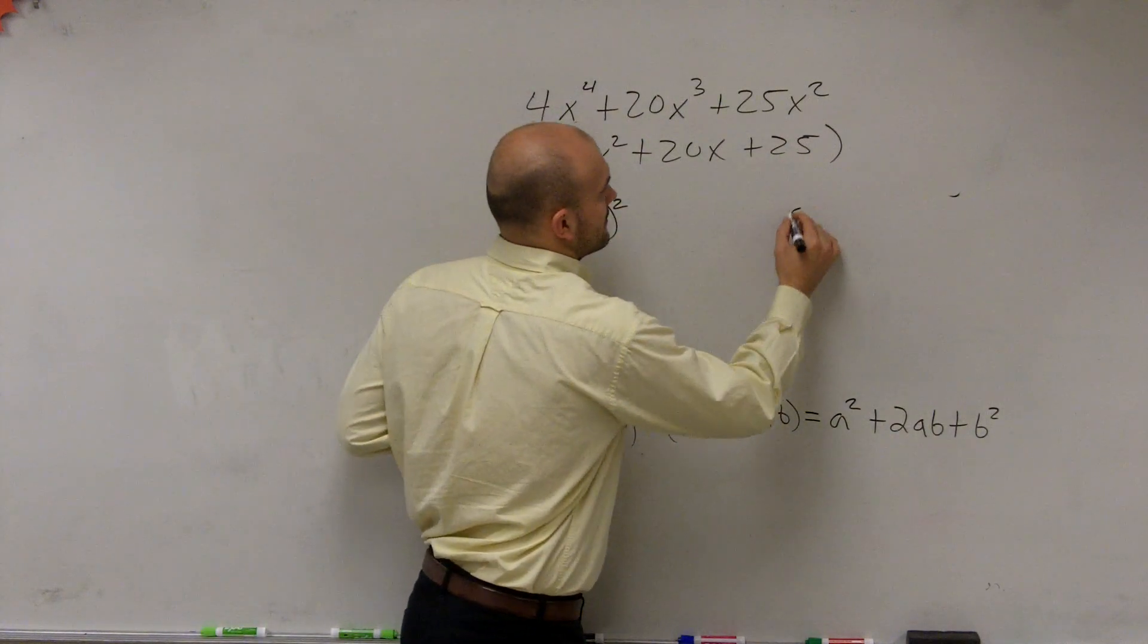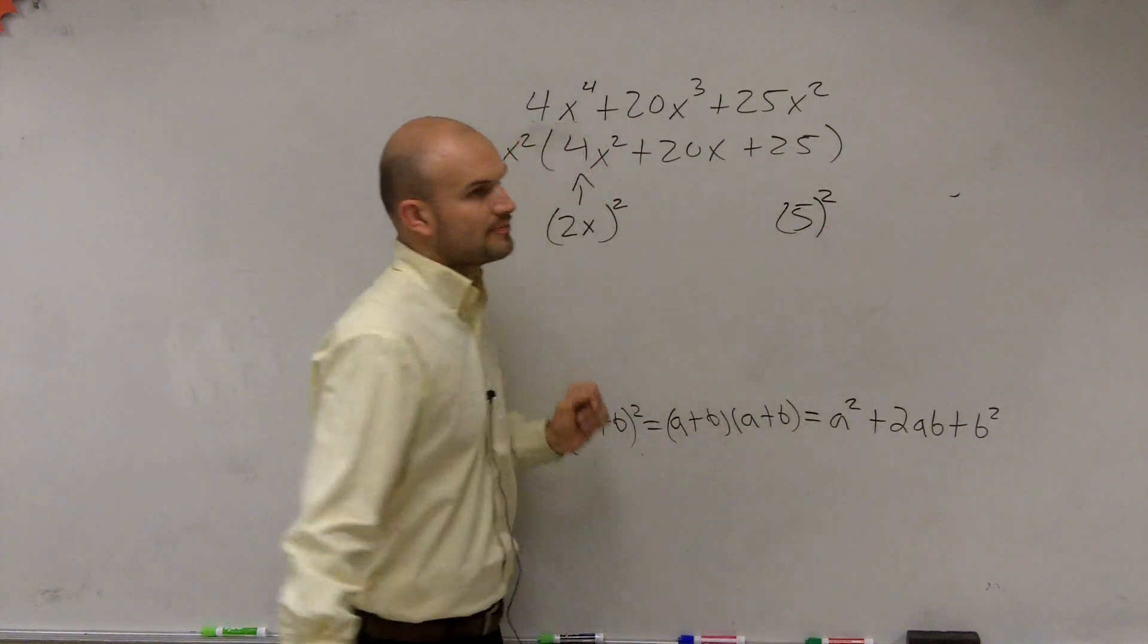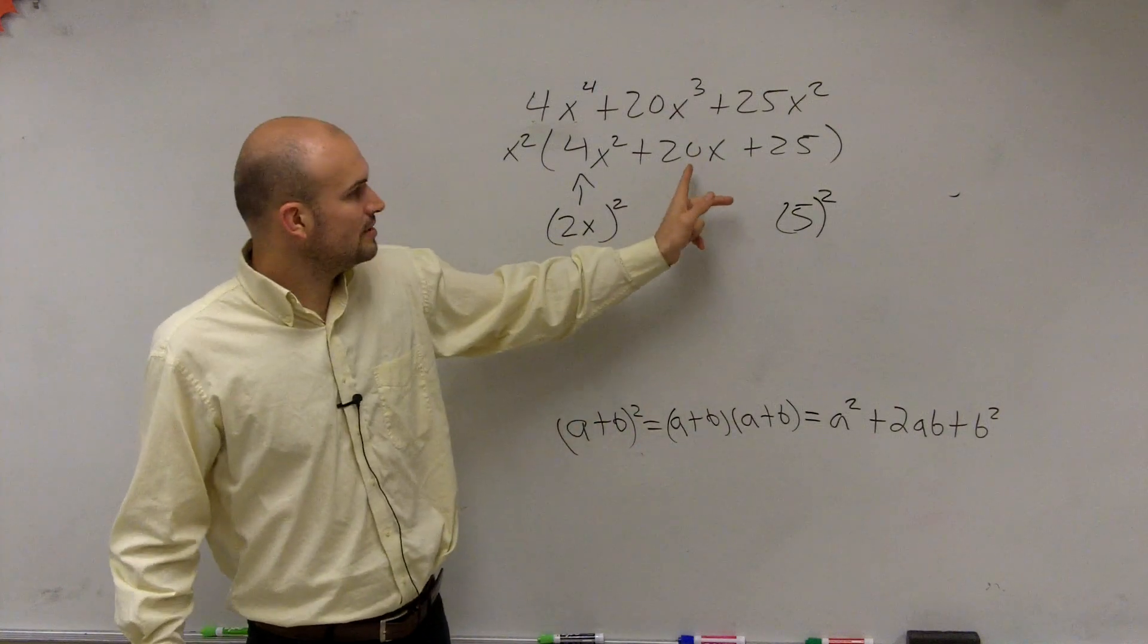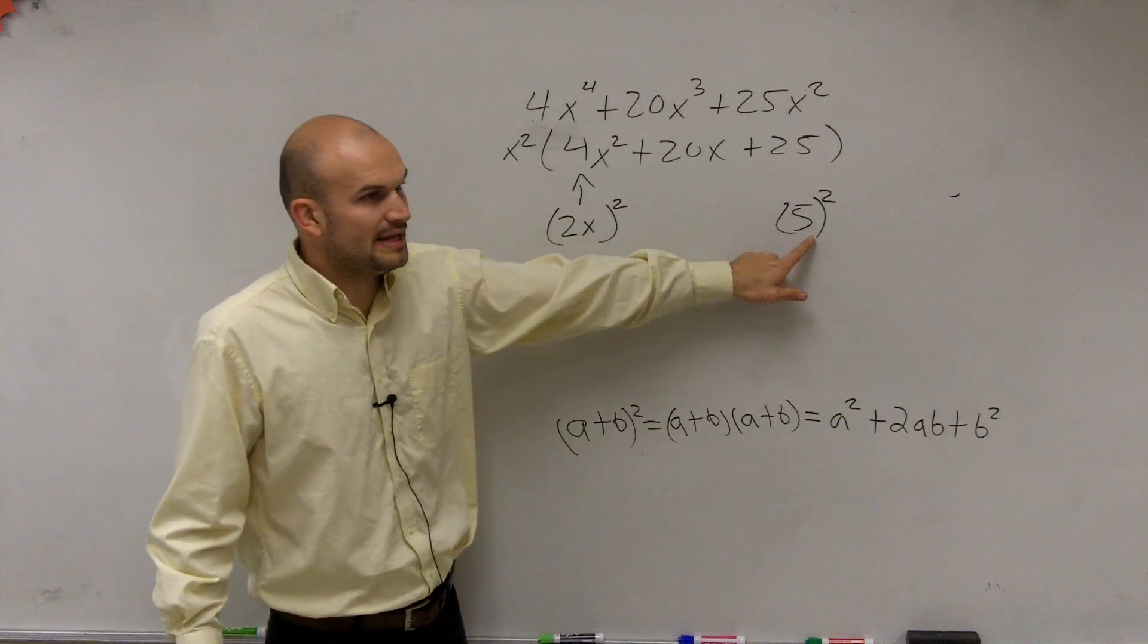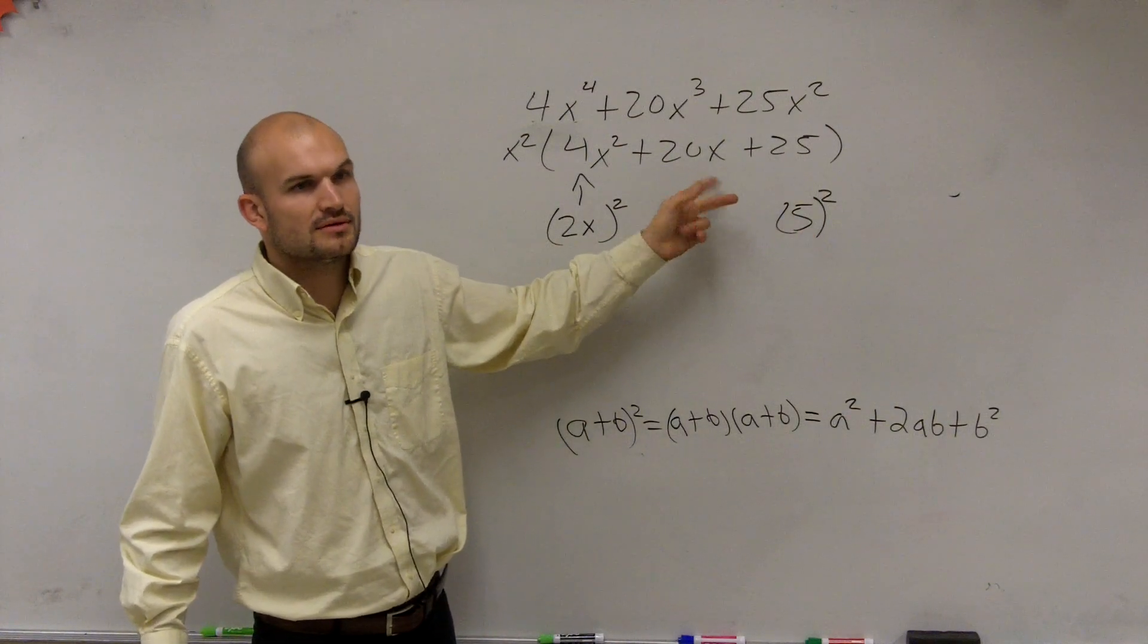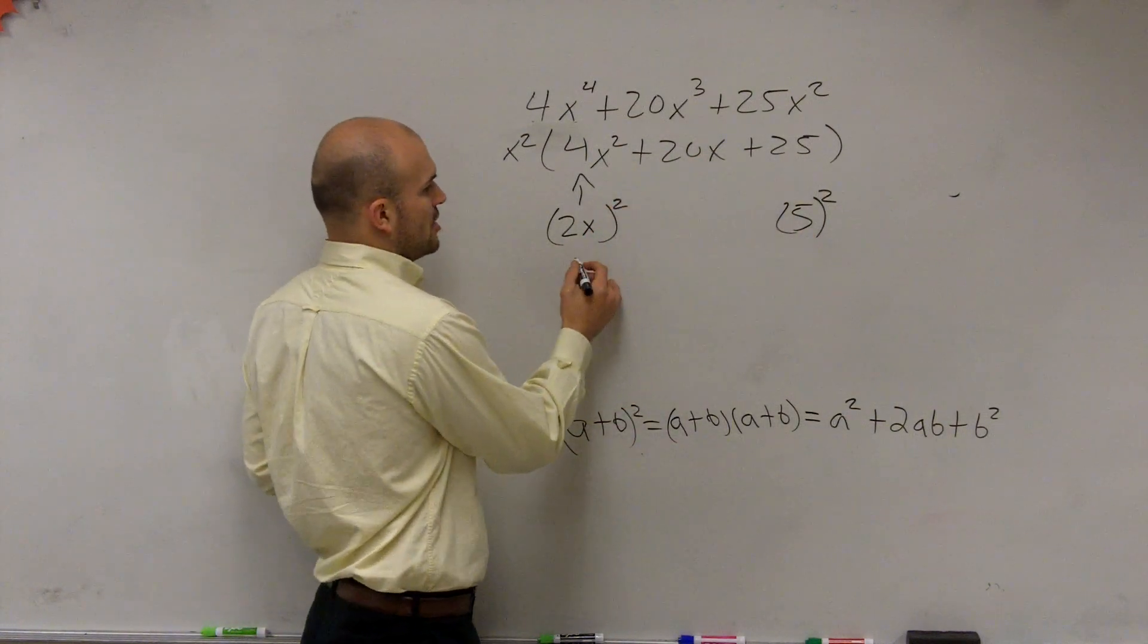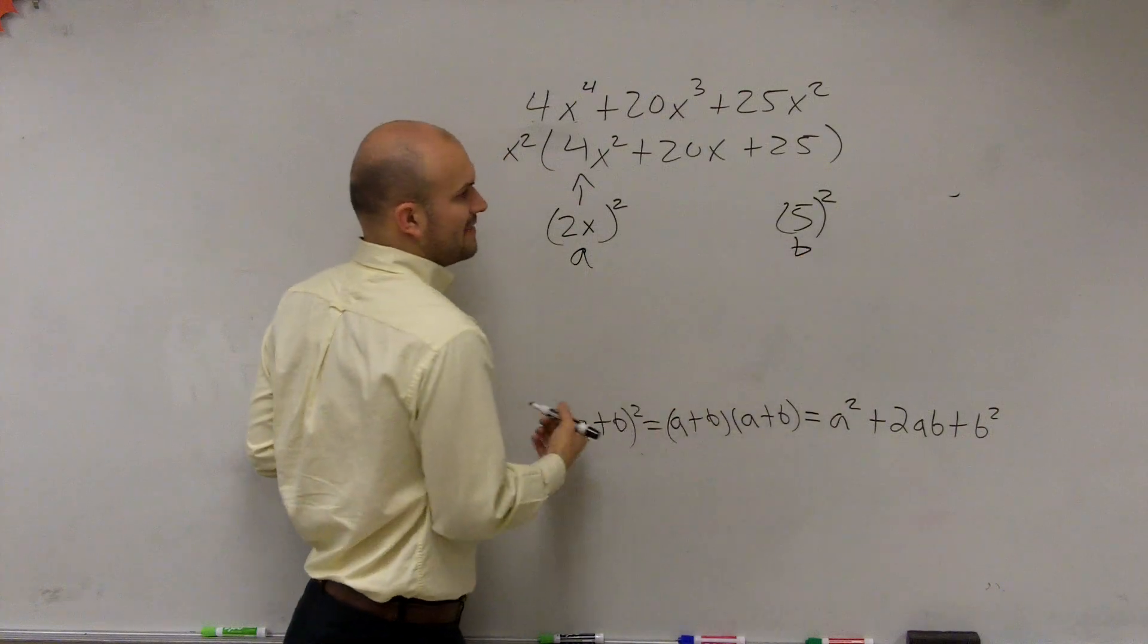Yeah, it's 5 squared. Now, is our middle term twice a times b? So this would be a, this would be b. Is our middle term twice that? Yeah. So what you could just do is say, oh, OK. That's your a, and that's your b.